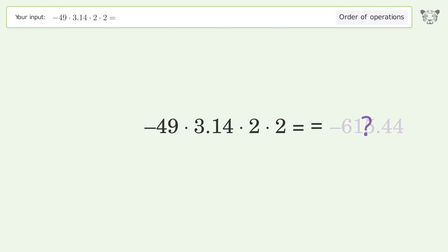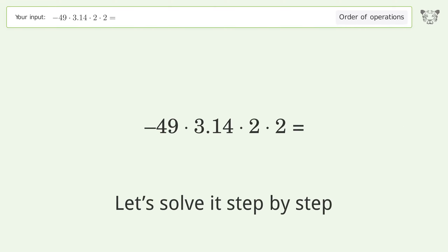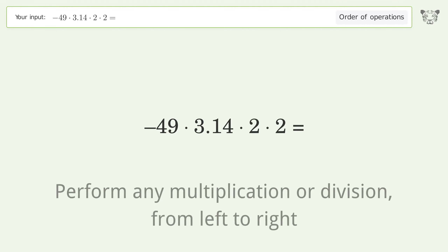You asked Tiger to calculate. This deals with the order of operations. The final result is negative 615.44.